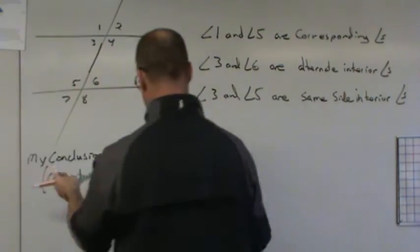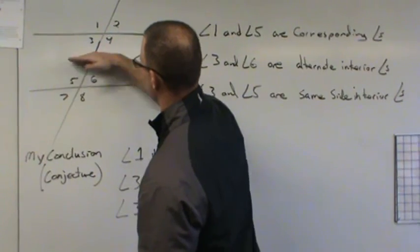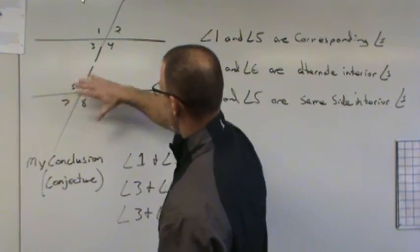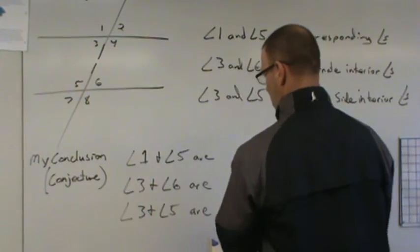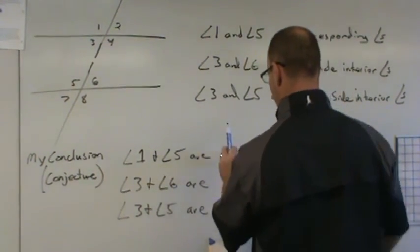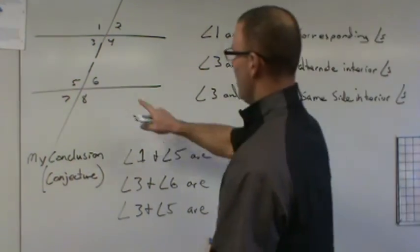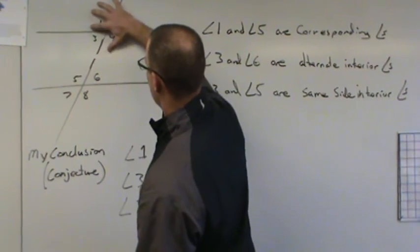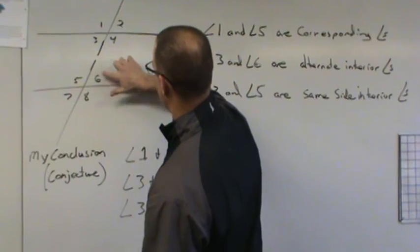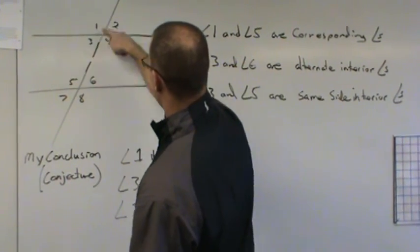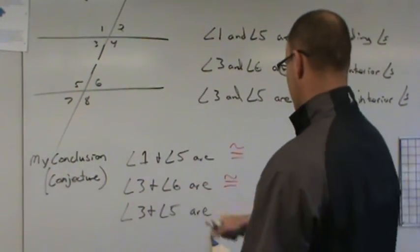So when you look at what our conclusions are, angle one and five, imagine cutting this right here with a pair of scissors and moving these angles down here. If these two lines are parallel, one would cover up five. So angle one and angle five are congruent. There's my conclusion. Angle three and six, if I take and again, move this group of angles down here or the bottom group of angles up here, six would go to two. What do we know about vertical angles? Vertical angles are congruent. So angle three and six are congruent.